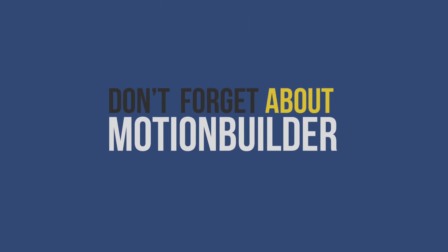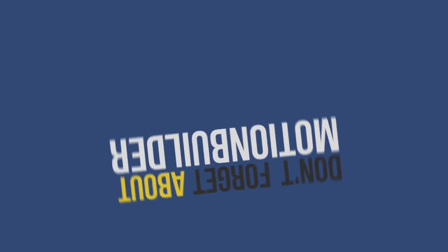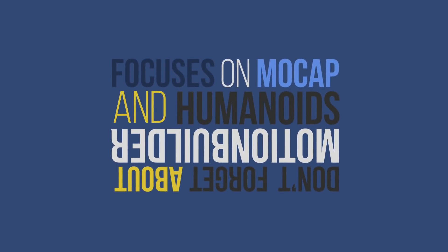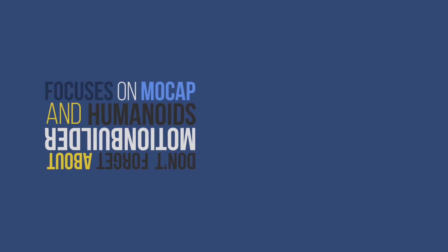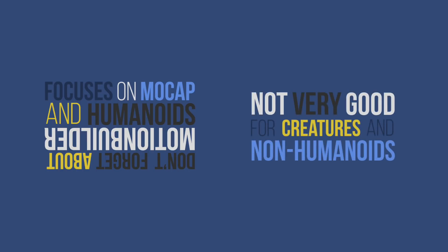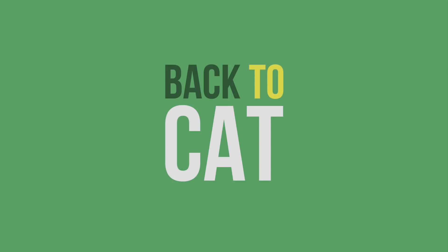Let's mention MotionBuilder as well real quick, because it belongs here. It's kind of a specific software because it focuses mainly on motion capture and therefore humanoids. So if you have anything to do with motion capture, use MotionBuilder by all means. But if you want to do quadruped animals or something different than humanoid, you shouldn't do it in MotionBuilder, as you basically lose all the advantages it brings. But let's get back to CAT.